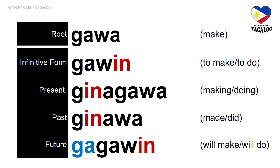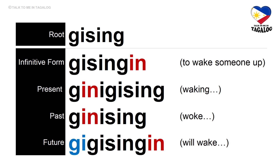Root word: gawa. Infinitive form: gawin — meaning to make or to do. Present tense: ginagawa — making or doing. Past tense: ginawa — made or did. Future tense: gagawin — will make or will do something.